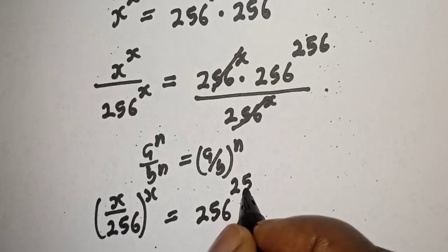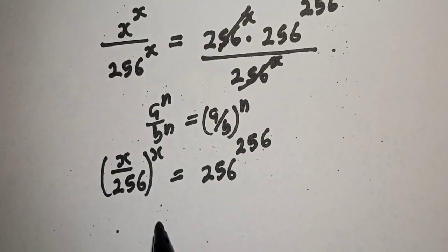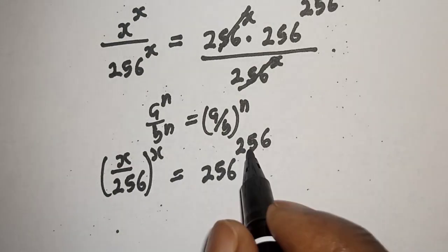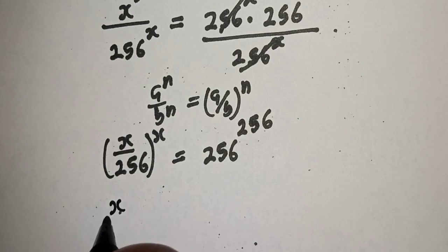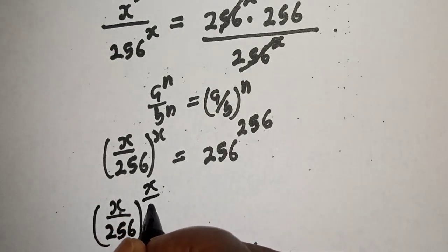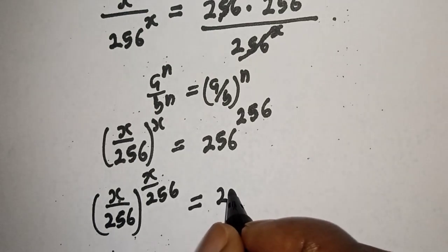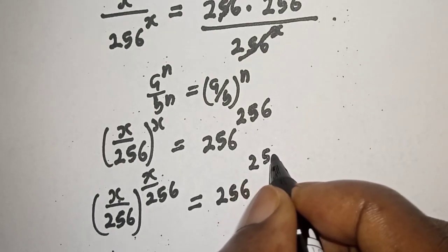s over 256 raised to power s is equal to 256. Now let's divide the exponent of both sides by 256. That is s over 256 raised to power s over 256 is equal to 256 raised to power s over 256.